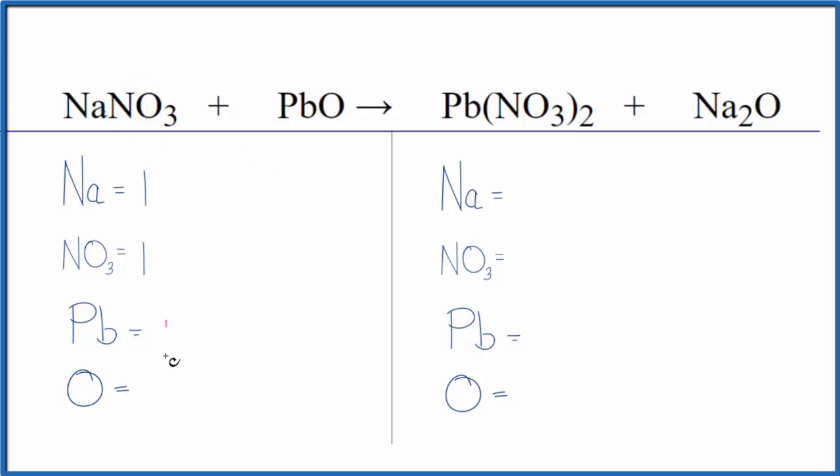One lead and then one oxygen. On the product side we have sodium - two of those. Nitrate - we have one times two, so we have two nitrate ions, one lead, and one oxygen. So it's very easy to see what we need to do here - we need to double our sodium and we need to double the nitrate.